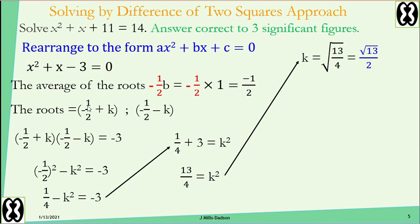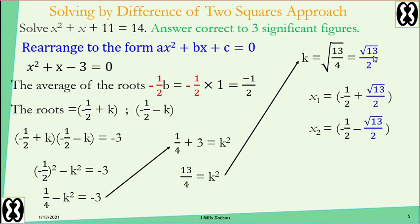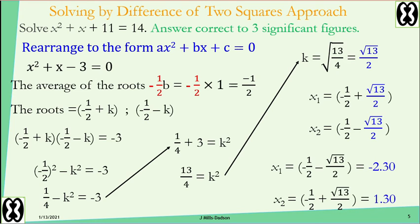Go back to your roots and replace k with root 13 over 2. The first root is negative one-half plus root 13 over 2, and the second is negative one-half minus root 13 over 2. Simplified they give approximately negative 2.30 and 1.30 to three significant figures. Done.